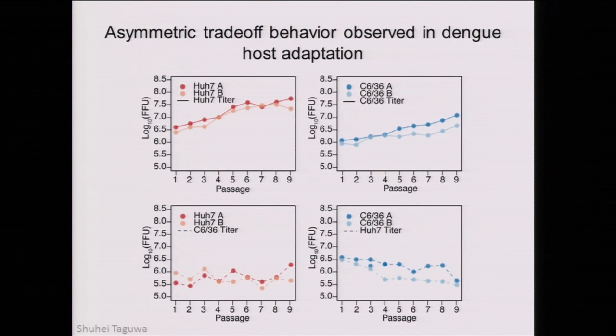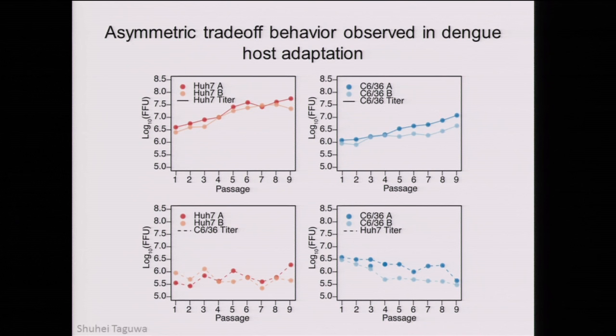These are the phenotypes of the adapting populations. Showing human-adapted on the left and mosquito-adapted on the right, we see an increase in titers for two replicate populations A and B in the adapted host. But when we plate these populations onto the alternative bypassed host, we see rather flat viability on C636 from human-adapted populations, and a decrease in titers on human cells with mosquito-adapted populations—an asymmetric trade-off between these two adaptation schemes.